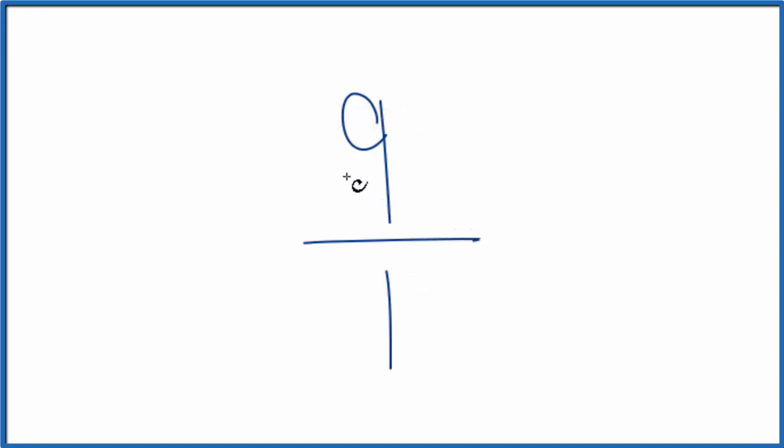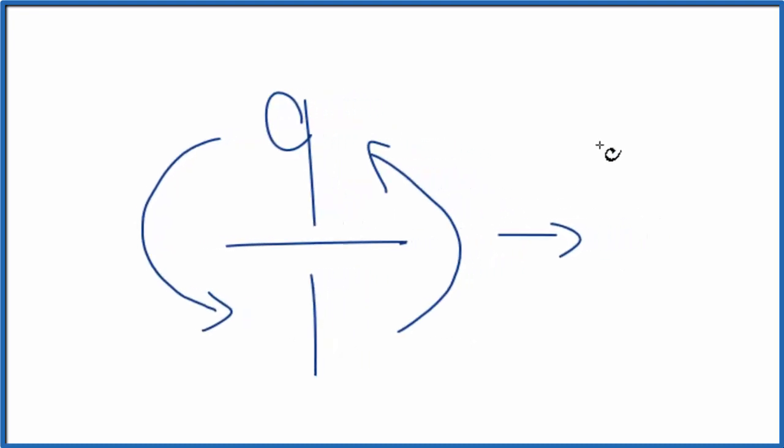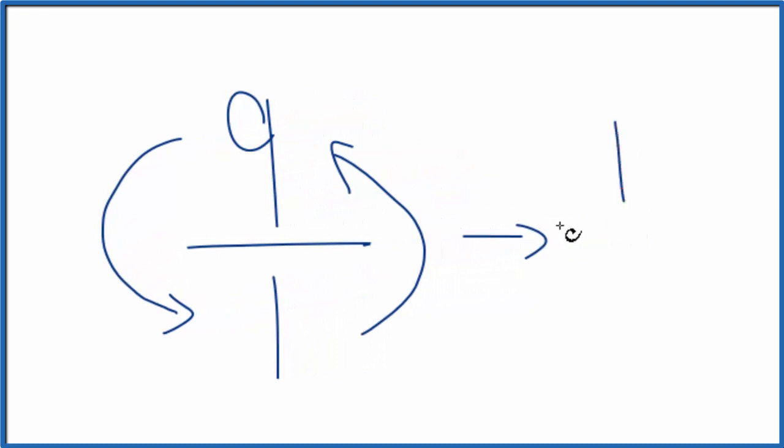But now when we take the reciprocal, we're going to flip the numerator and denominator. We'll move the numerator down here and the denominator up top. So we end up with the reciprocal for nine is one on top, nine on the bottom. The reciprocal of nine is one ninth.